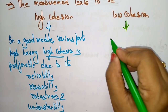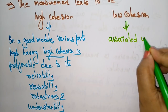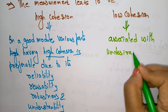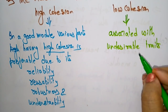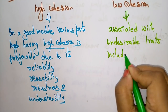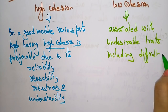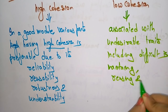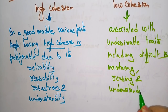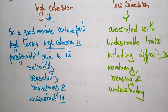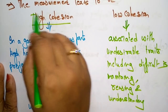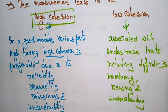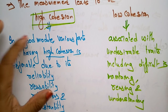Low cohesion is associated with undesirable traits, including difficulty in maintaining, reusing, and understanding the product. If your system has low cohesion, you will face difficulty in maintaining, reusing, and understanding it. So it is better to go with high cohesion if you want to make your software reliable and extendable.